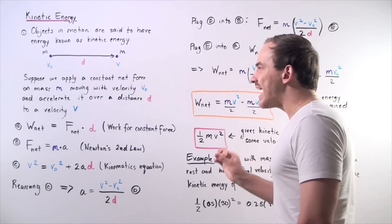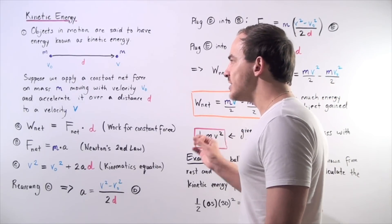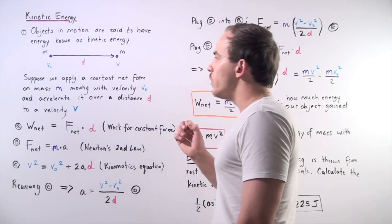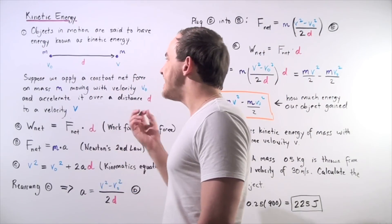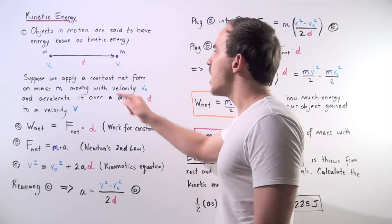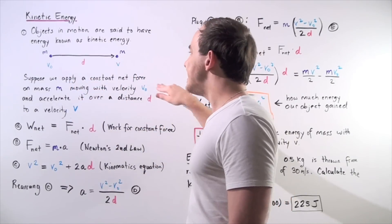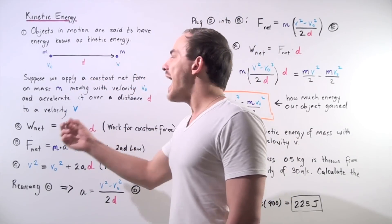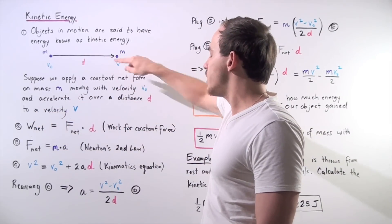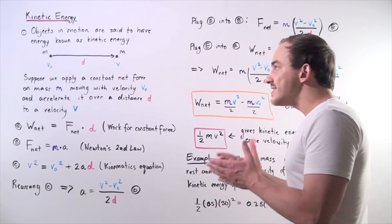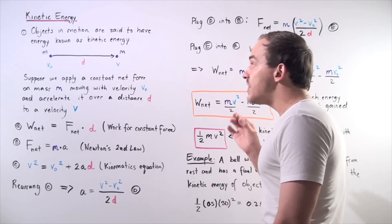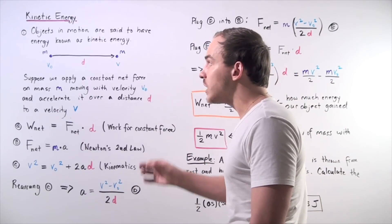Before we define what exactly kinetic energy is in terms of mass and velocity, let's look at the following situation. Let's suppose we have our mass with initial velocity v-naught, and suppose we apply a constant net force on mass m moving with initial velocity v-naught, and accelerate it over a distance d to a final velocity. We're essentially applying a constant net force on our mass over a distance, and that means we're doing work on our mass.